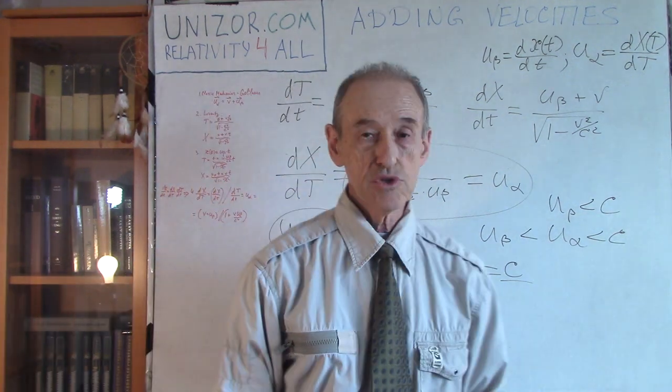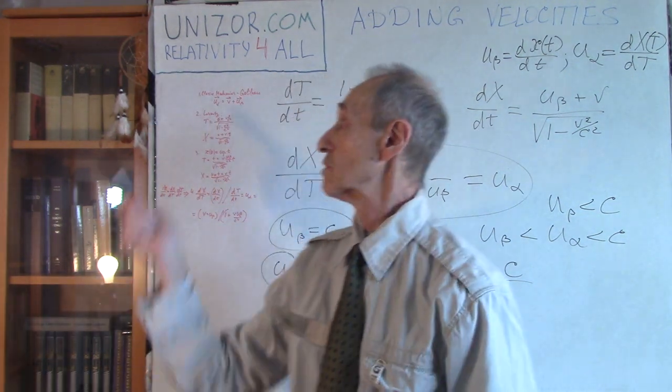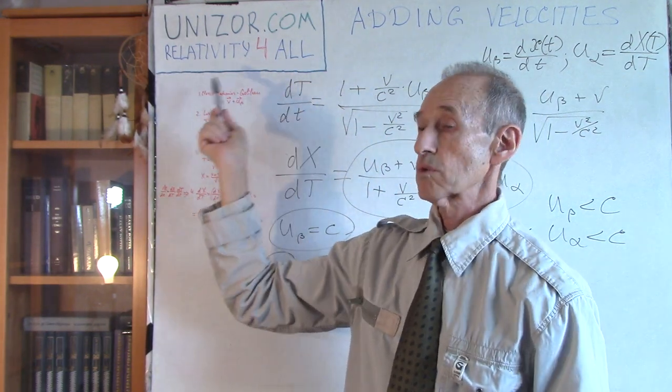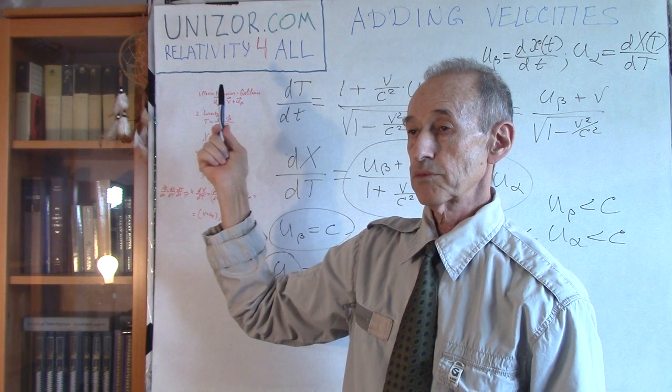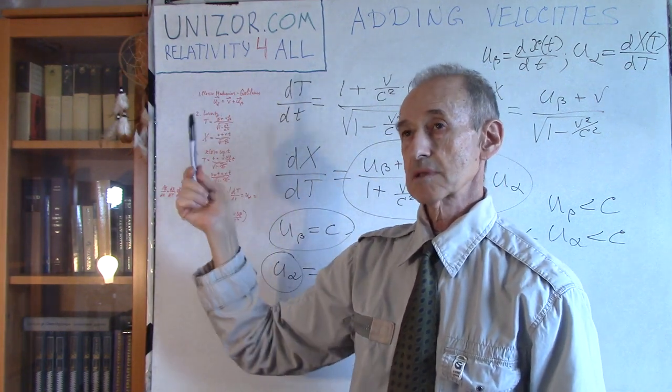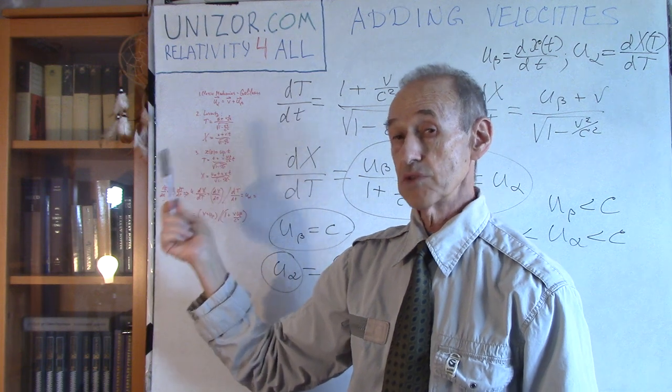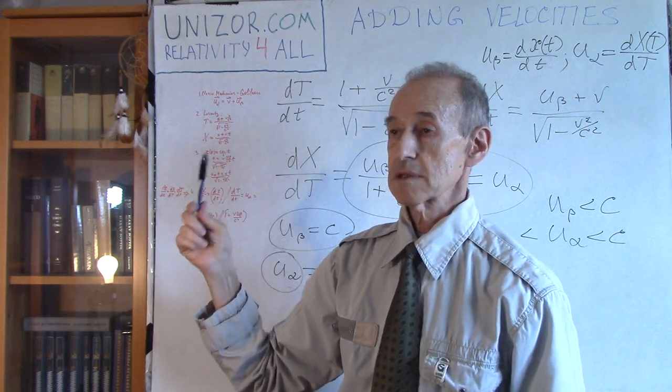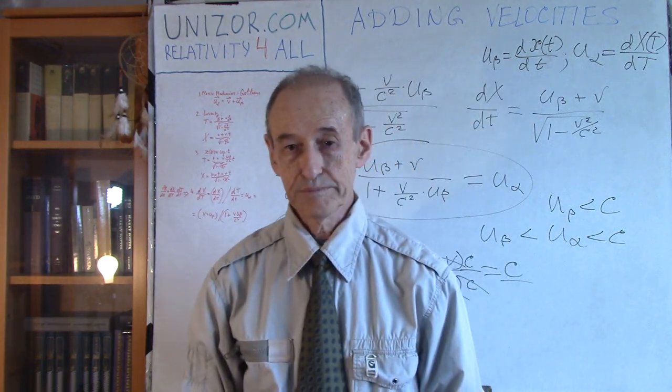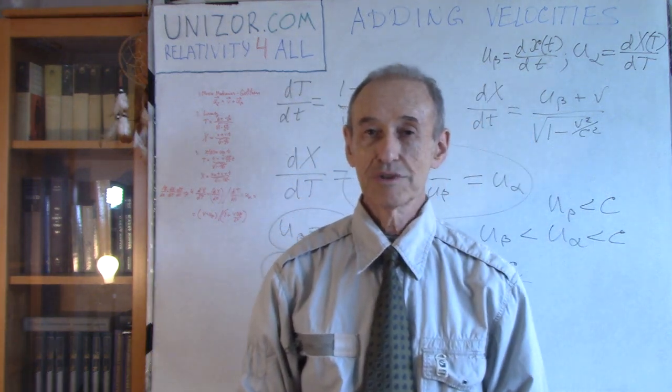That's it. I suggest you to read the notes for this lecture at unizor.com. The course is called Relativity for All from the front menu, and it has certain submenus. This goes to Einstein view, and within this Einstein view you will find the Adding Velocity lecture. Thank you very much and good luck.